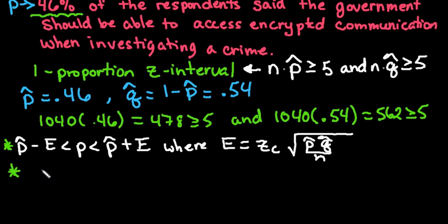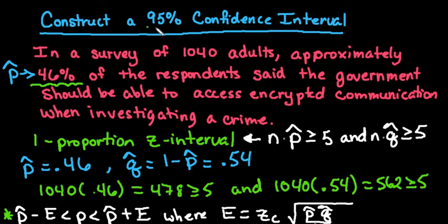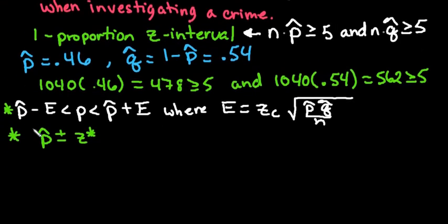There could be other ones out there because there's a lot of inconsistency in statistics textbooks. So the one that I use more often, just because it's shorter, is I use p̂ plus or minus z star, which is just another way of doing zc, times the square root of p̂q̂ over n.